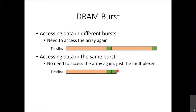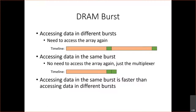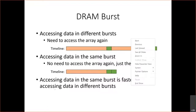A student asked whether it depends on a clock. The time to change the MUX to get another part of the burst requires much fewer clock cycles than waiting for the sense amplification and DRAM array read. The moral: accessing data in the same burst is faster than accessing data in different bursts.